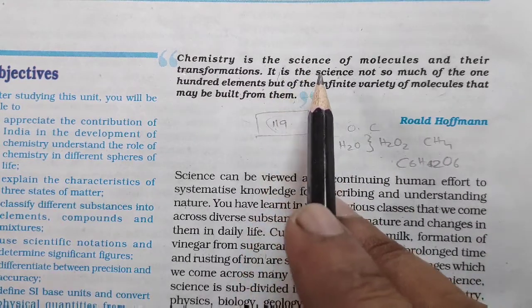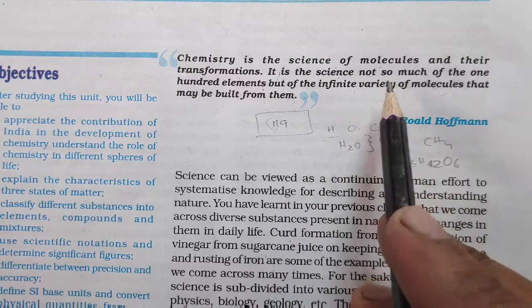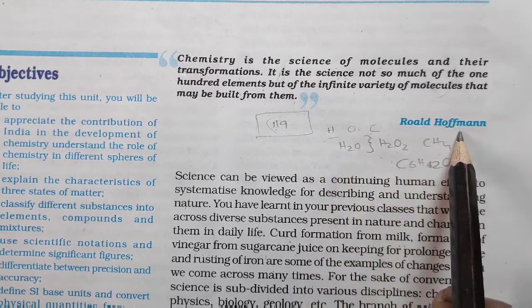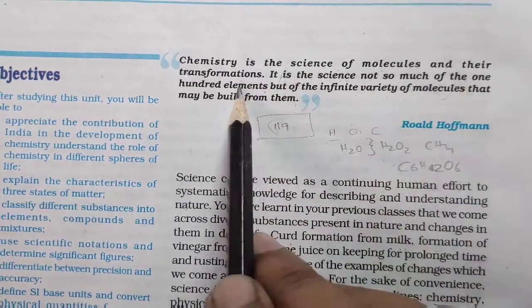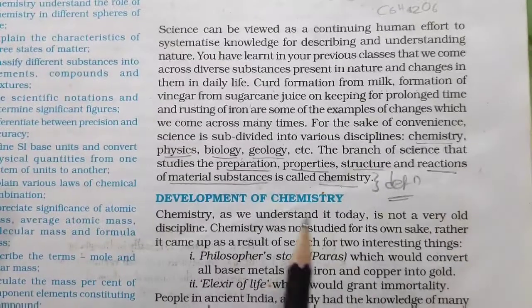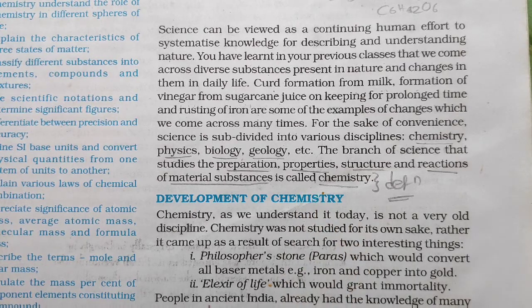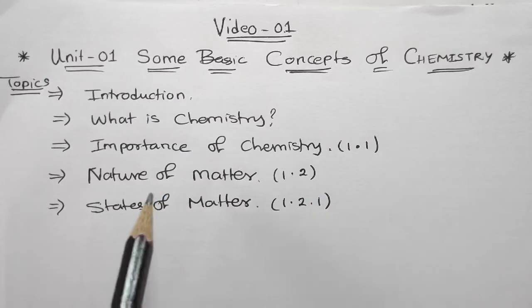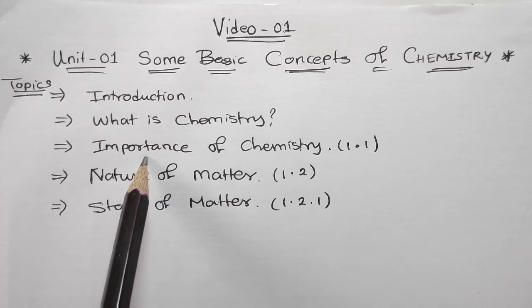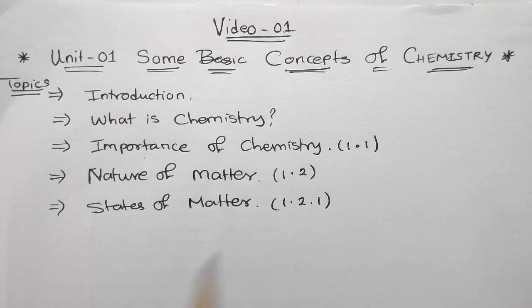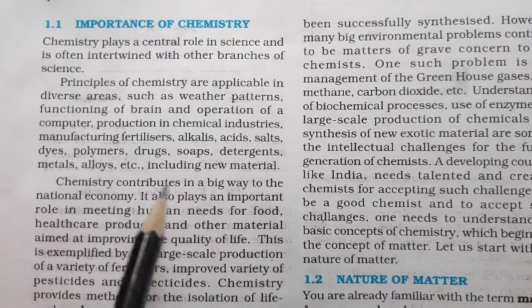Many students think chemistry means a study of chemicals, but actually the definition by Roald Hoffmann states it is 'the science of molecules and their transformation.' The second definition describes chemistry as the branch studying preparation, properties, structures, and reactions of material substances. These are the two definitions you have to remember. Now the third topic is the importance of chemistry, topic 1.1 on page 4 of your textbook.